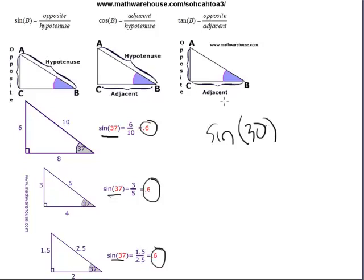The sine of 30, and that's why we can use our calculator, right? If you pull out your calculator, it'll tell you that the sine of 30 is 0.5. It's just a fact about right triangles and a 30 degree angle. The sine ratio is 0.5.